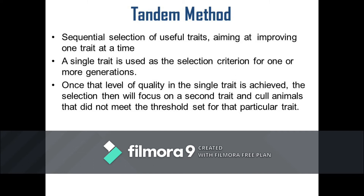For example, a breeder may have an objective of increasing growth rate, decreasing back fat, and increasing litter size. In the first generation, selection would be in favor of the fastest growing hogs. This is then followed in tandem in the second generation by selecting the leanest hogs or those animals with the lowest back fat. Then finally, once the desired back fat thickness is attained with the previously achieved level of growth trait held constant, hogs from the largest litters are selected in the succeeding generation.